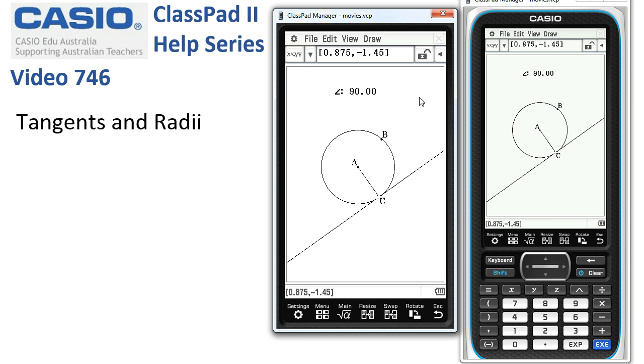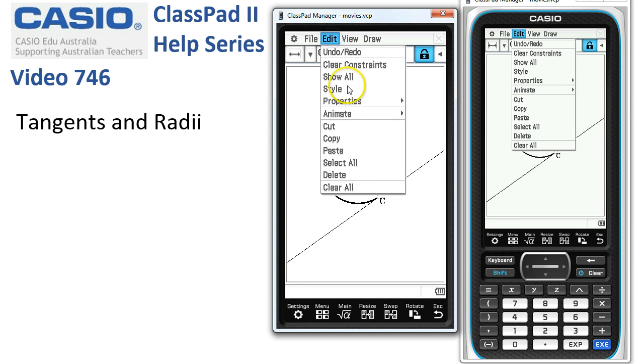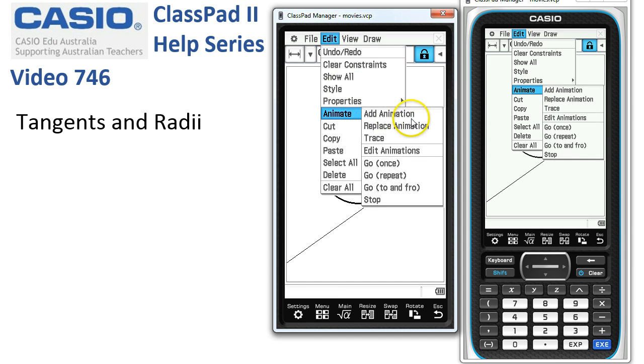And this is maybe worth where we could learn some basics of animation. If we've got a path such as this circle and C which is a point, then by choosing the point and selecting the path and tapping onto edit, animate, add animation.